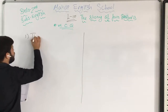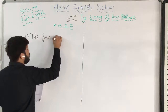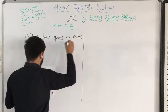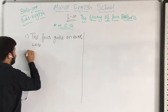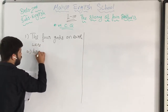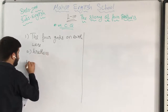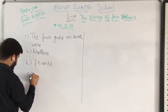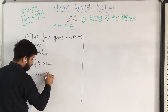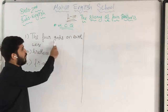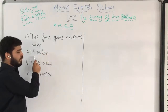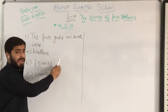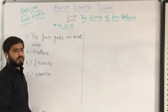Number one question is: the four gods on earth were — options are brothers, friends, or enemies. You have to write it in the way as shown on the board. Please make sure you write it in the same way.